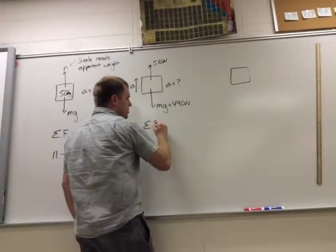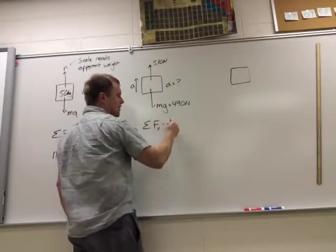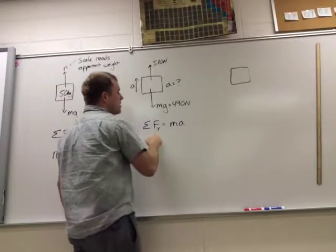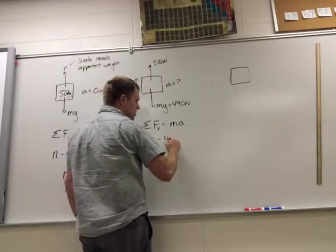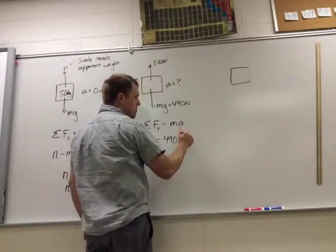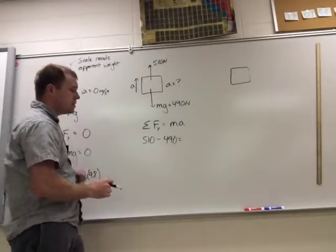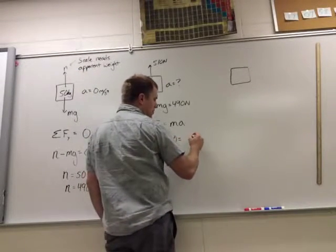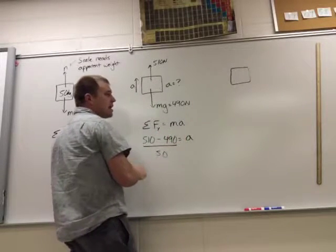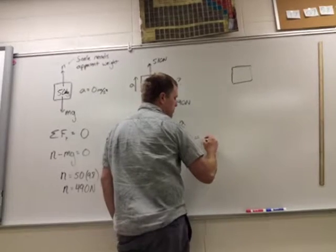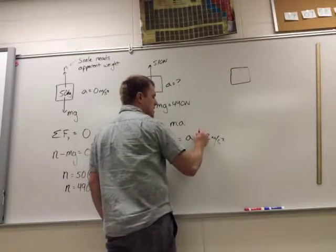So now I'm going to sum up the forces in the y direction again. But this time it is accelerating, so I say ma. I have 510 minus my weight, which is 490, equals mass, which we defined was 50 kilograms. And so I just have to solve for the acceleration. So I'm going to divide that mass over to the other side, so divide by 50. So I end up with an acceleration of 0.2 meters per second squared. And it's positive meaning it is up.